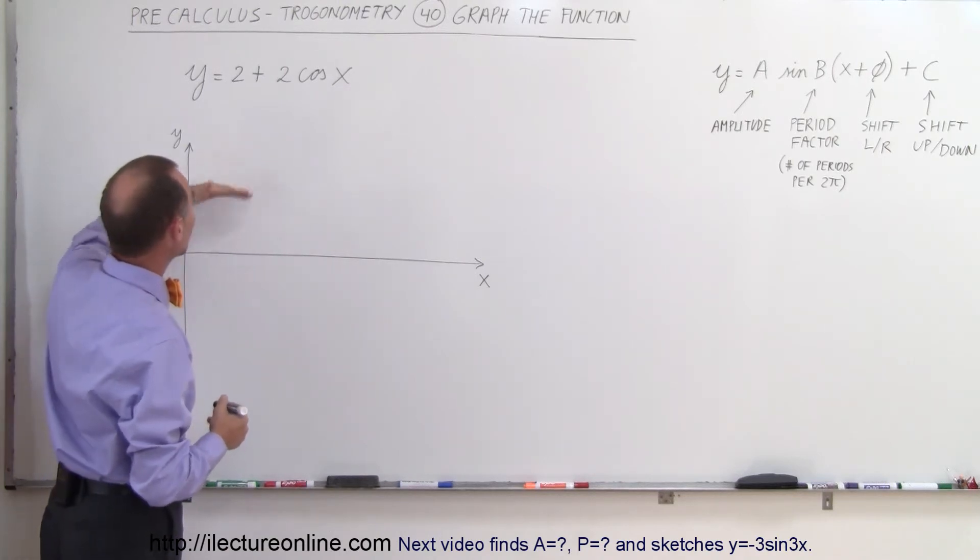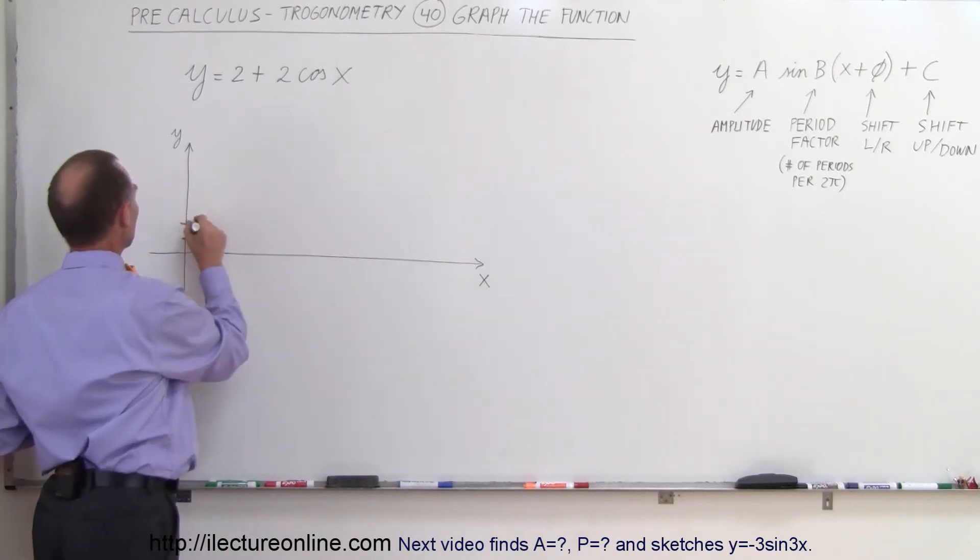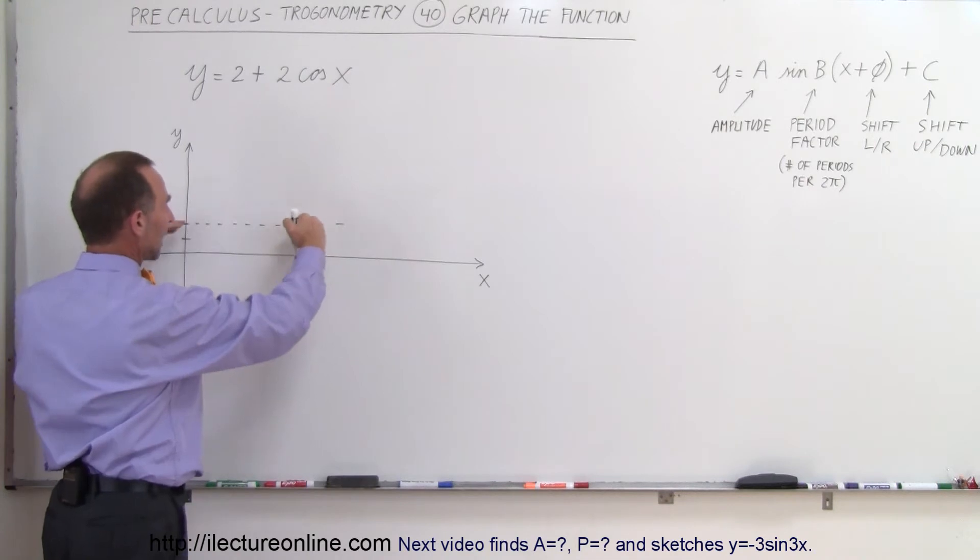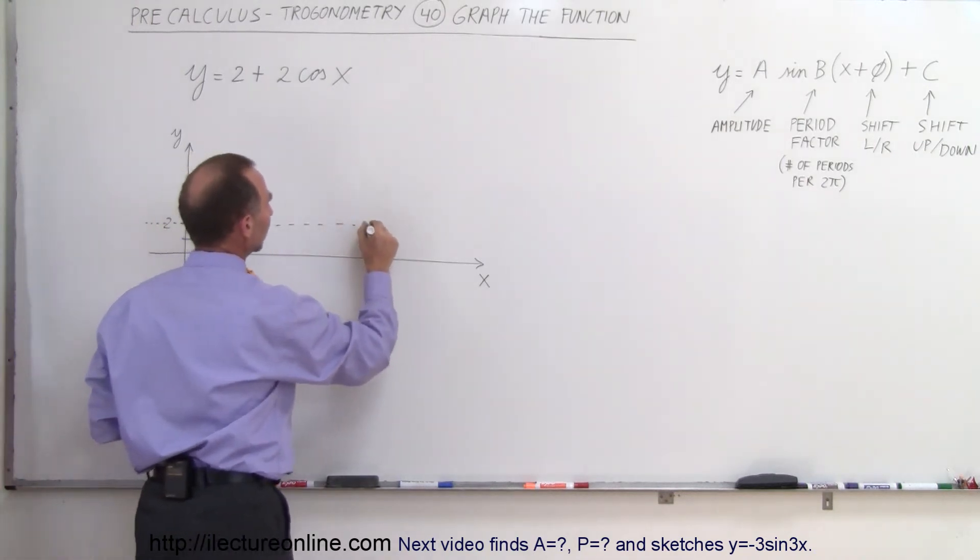Now since it will be raised 2 units up, so 1, 2, that now becomes the new line about which we're going to draw the function. Instead of drawing it on the x-axis we're going to draw it on the axis 2 units above the x-axis.